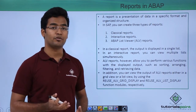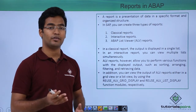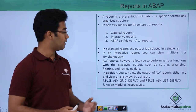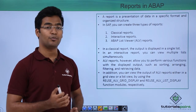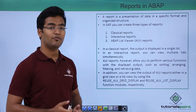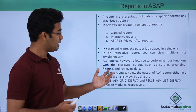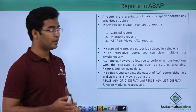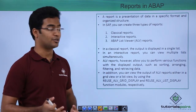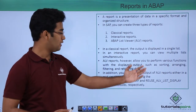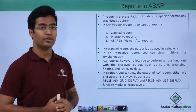In classical reports the output comes in the form of one single list. But in case of interactive reports the output comes in the form of multiple lists. And in ALV reports we are allowed to perform multiple functions like sorting, arranging, filtering and retrieving the data.